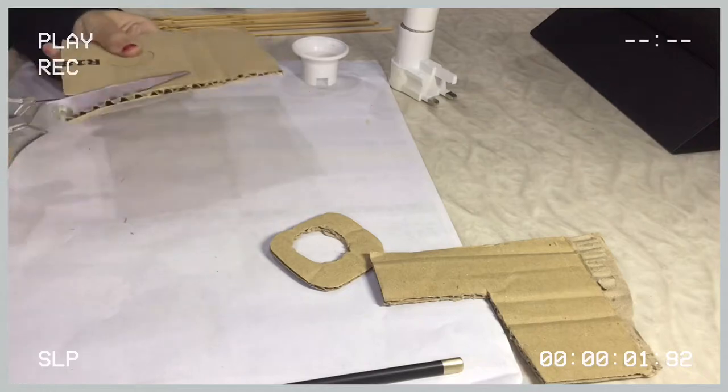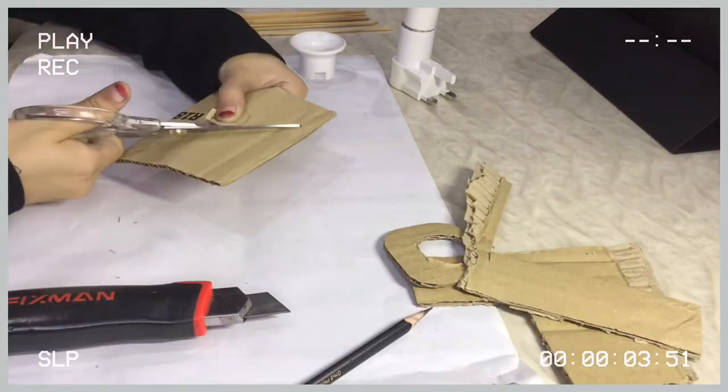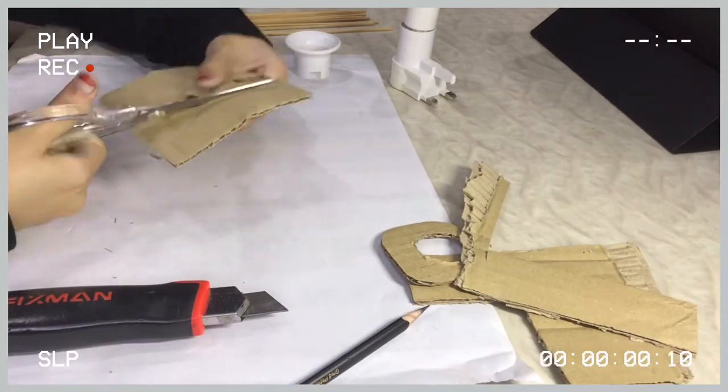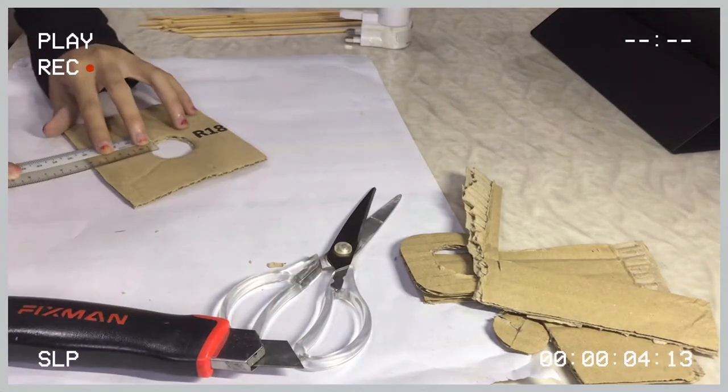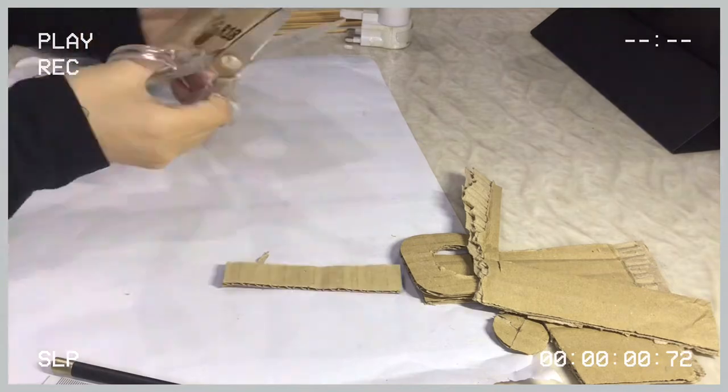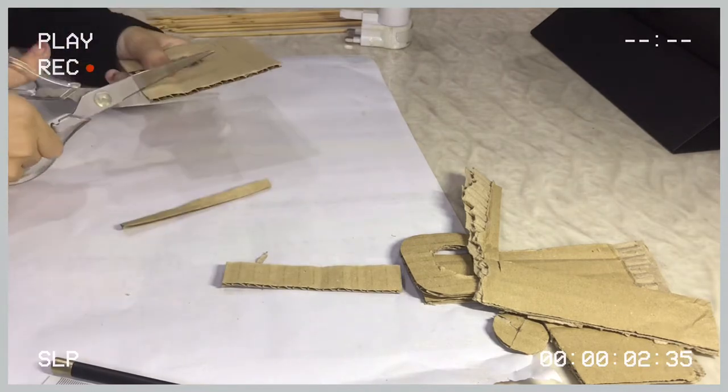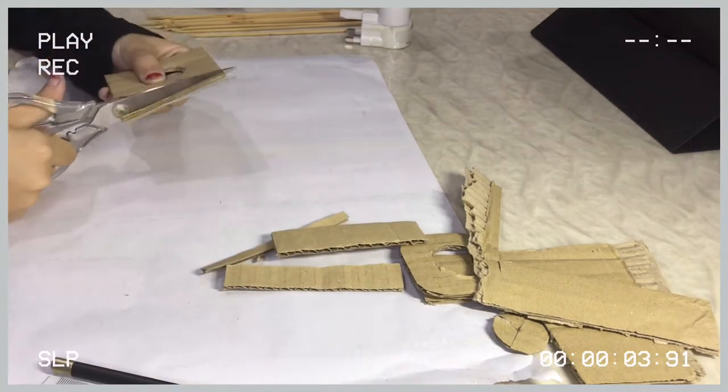Next, for the base, I just cut out a hole the same size as the bulb so that it will fit. Just cut away and then try to fit in the light bulb. And here I'm just cutting off the excess cardboard so that everything is going to fit just fine.